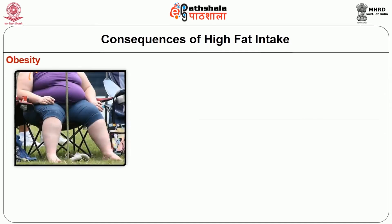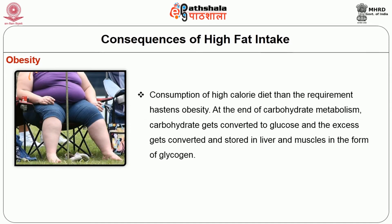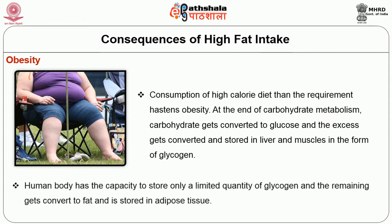Consumption of a high calorie diet in excess of requirement hastens obesity. At the end of carbohydrate metabolism, carbohydrates get converted to glucose and the excess gets converted and stored in the liver and muscles as glycogen. The human body has the capacity to store only a limited quantity of glycogen, and the remaining gets converted to fat and stored in adipose tissue.